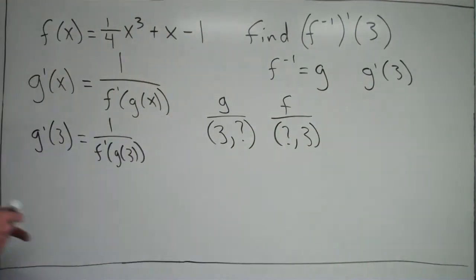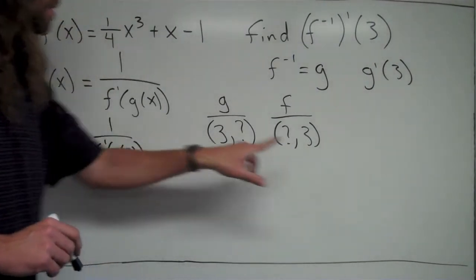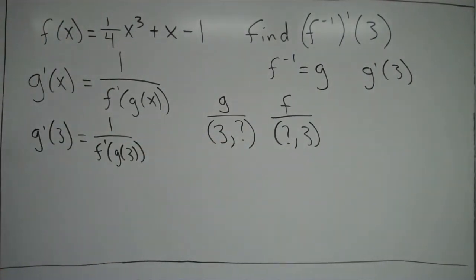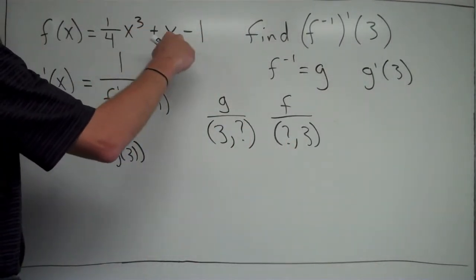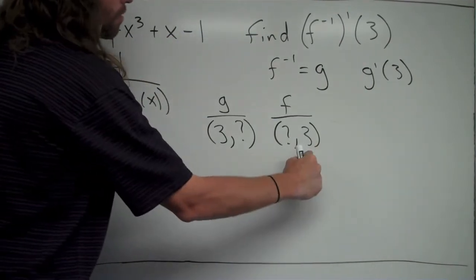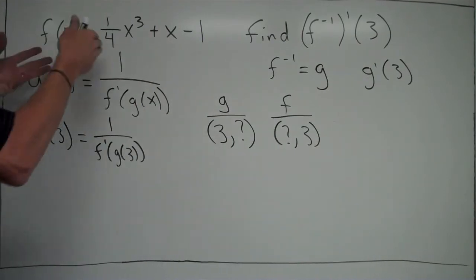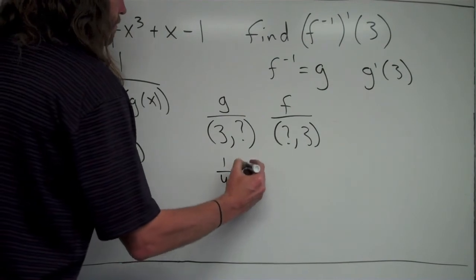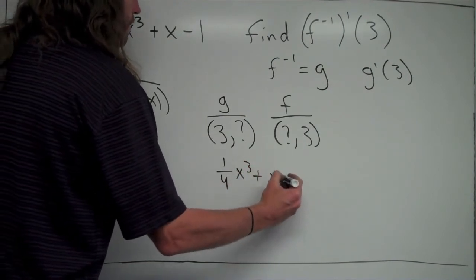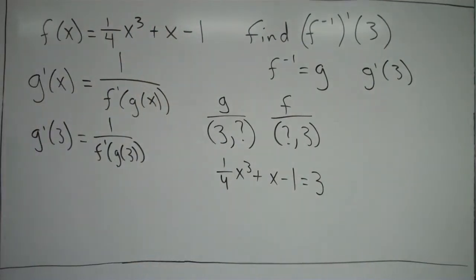So we're going to use this to help us find what that question mark is. Basically, we're saying that for some x-coordinate, if you plug some value in for x into f of x, it's going to equal 3. So we have to figure out what value of x makes this function f equal to 3. So we're going to set this equal to 3: 1 fourth x cubed plus x minus 1 equals 3. Now, this happens to be a whole number, and you might be able to guess it, but in general,